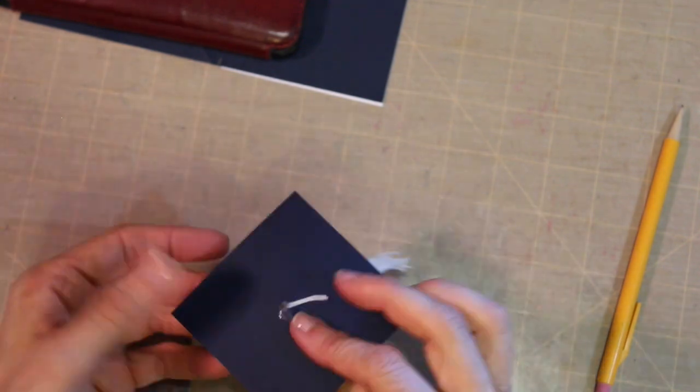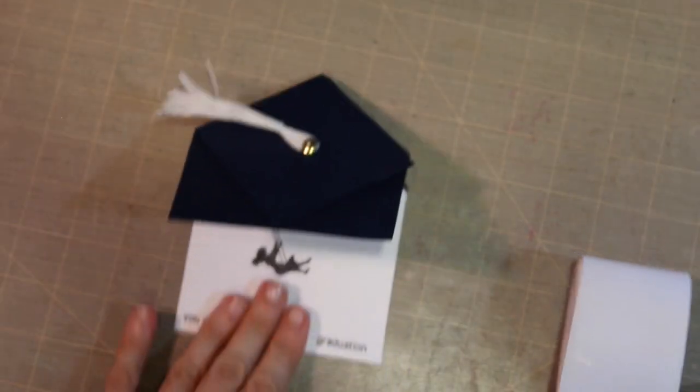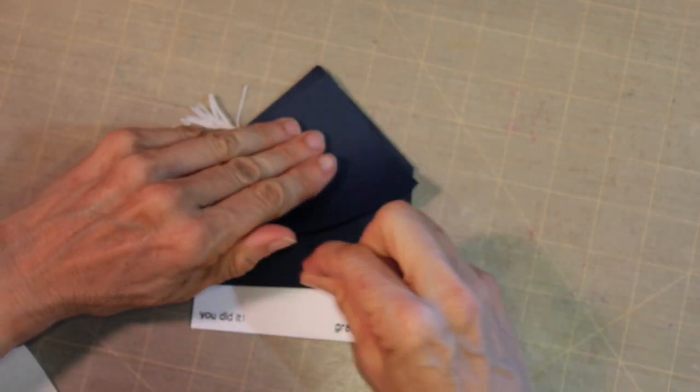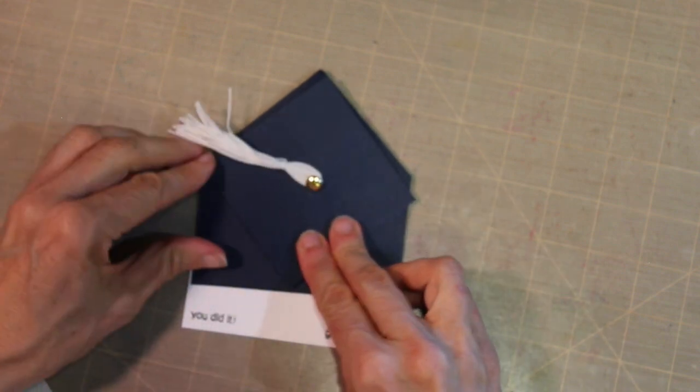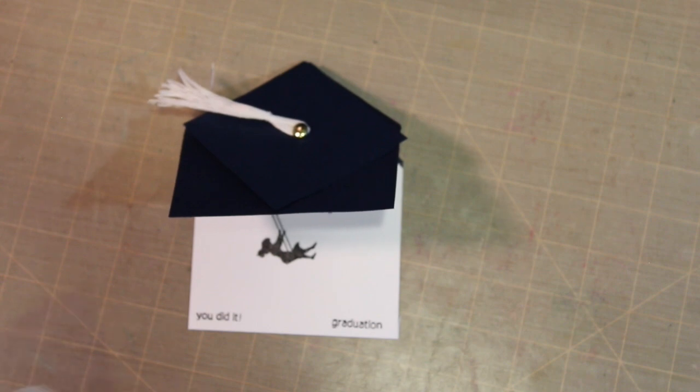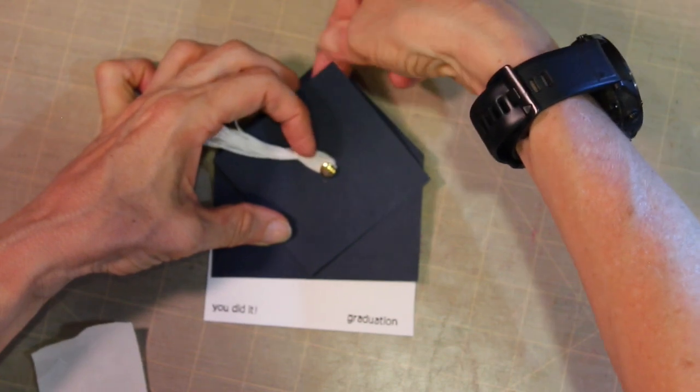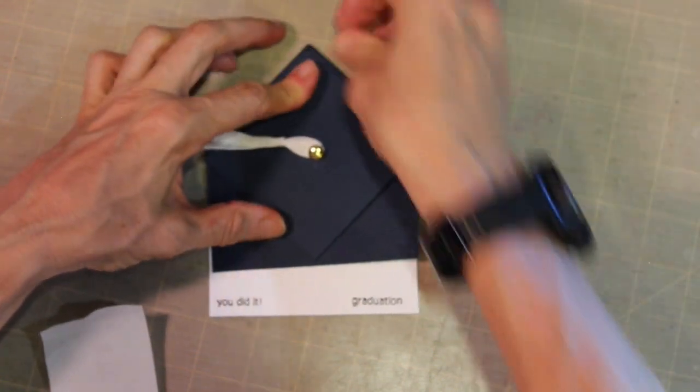I seem to have lost the video of where I actually attached the cap to the top of the card, but I just use some glue dots to fasten it down. So here's what the completed card looks like. Oh, I guess there we go—putting the glue dots in under the card, and that kind of leaves it with some dimension still.